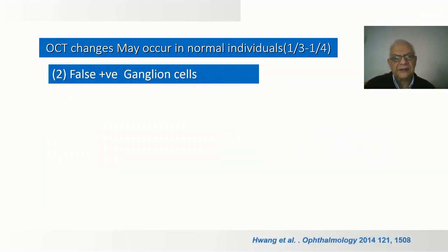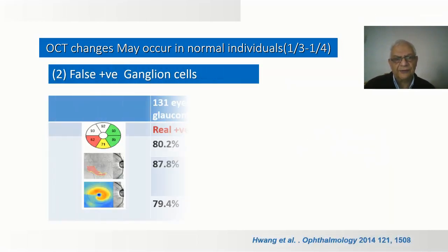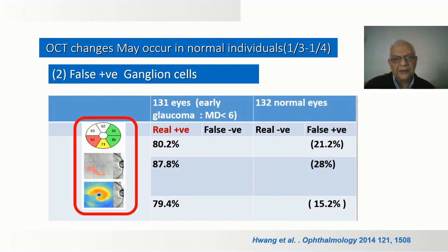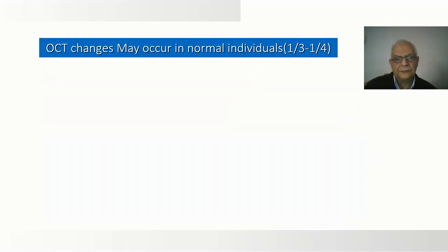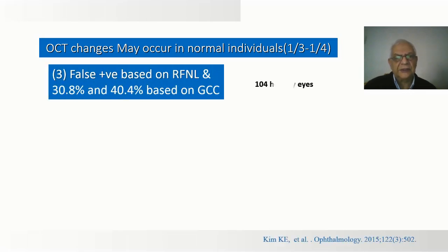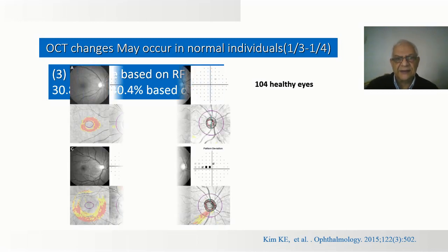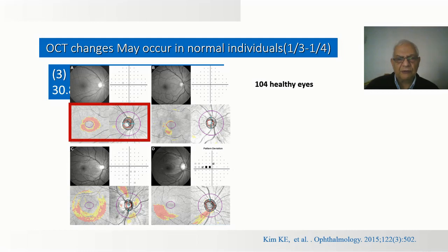In another study for the ganglion cells, false positives were also present. In 132 normal persons, various ratios of false positives were found depending on which parameters were used. A third study showed false positives in the retinal fiber layer in 30% of cases and in the ganglion cell complex in 40% of cases. These are some examples of false results.